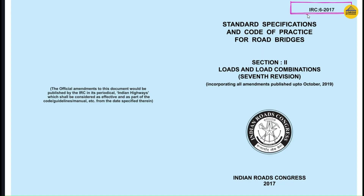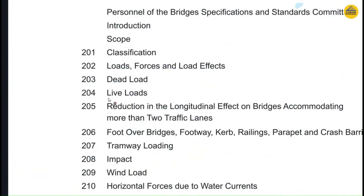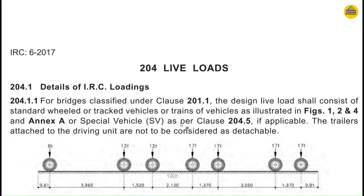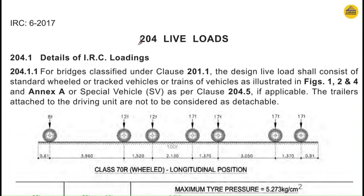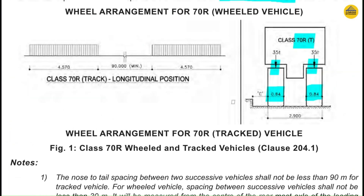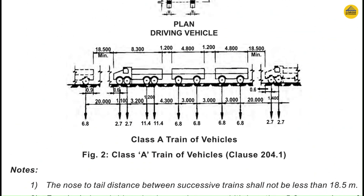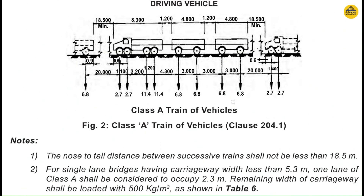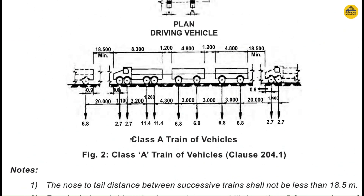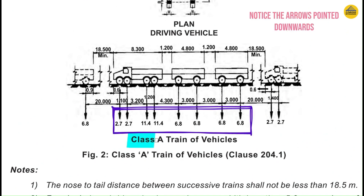Now why skip our IRC6 code? Let's see what's mentioned there. IRC6 has clause 204 which talks about live loads, and within it there are multiple live loads: 70R wheel, 70R track, 70R bogey, 40/10 bogey, 20/10 bogey, Class A, and Class B. That won't all be covered in this episode — let's focus directly on the Class A live load.